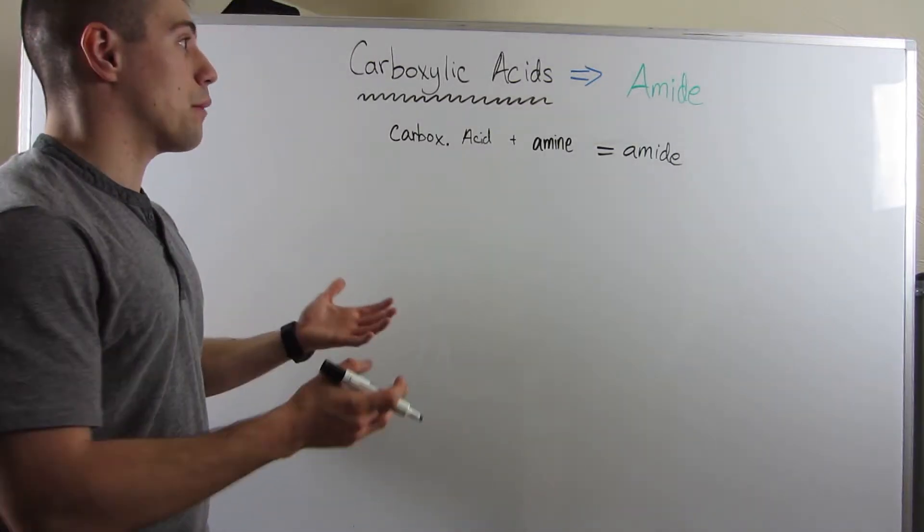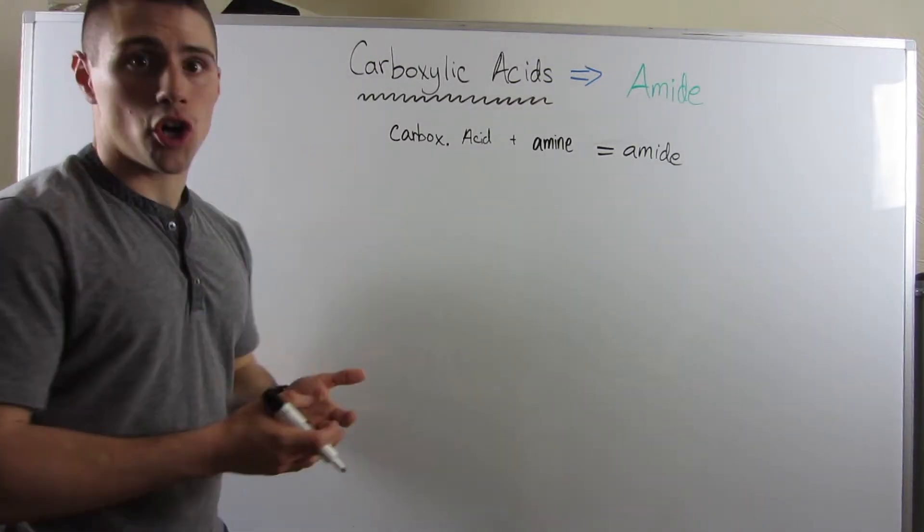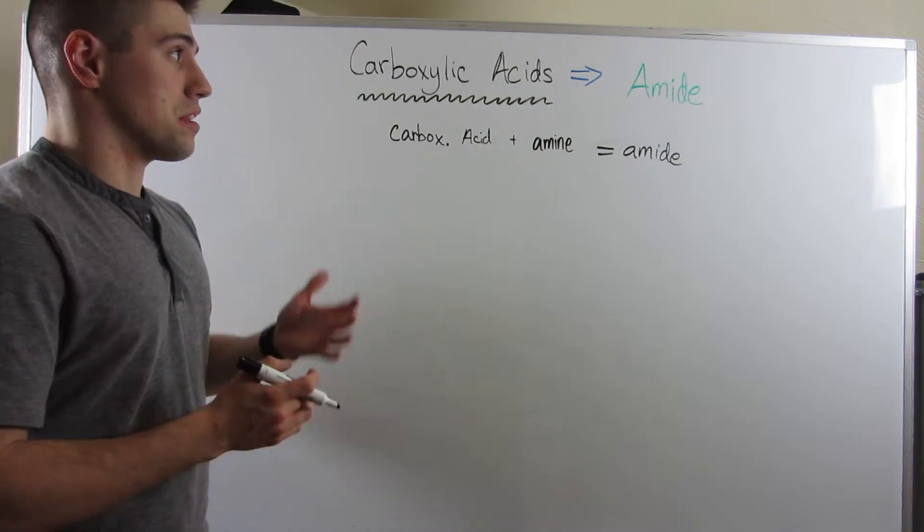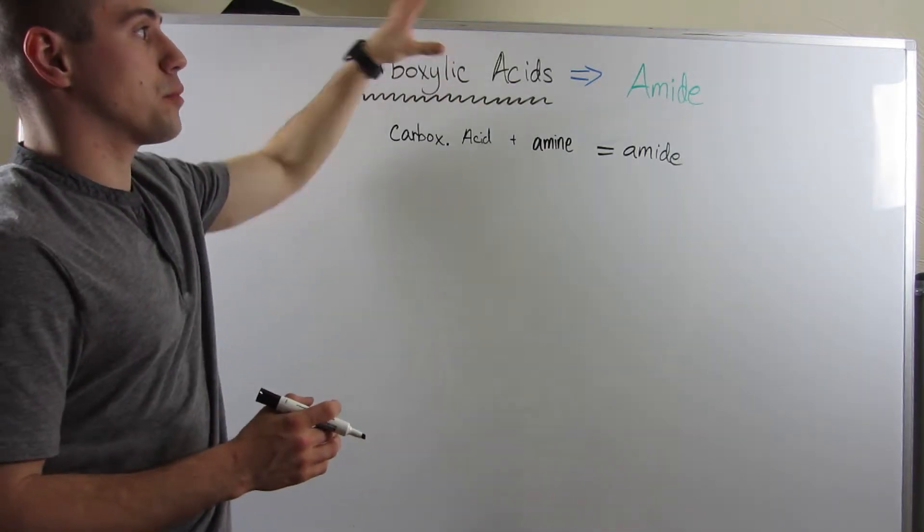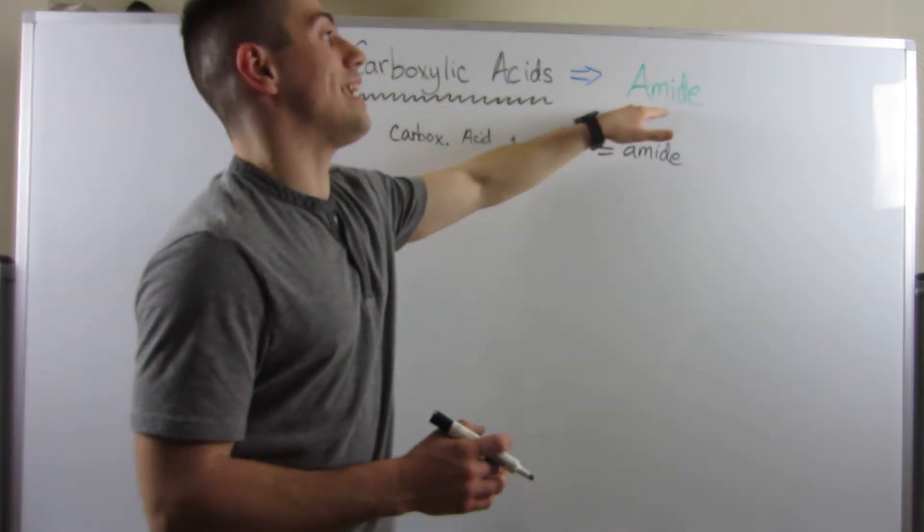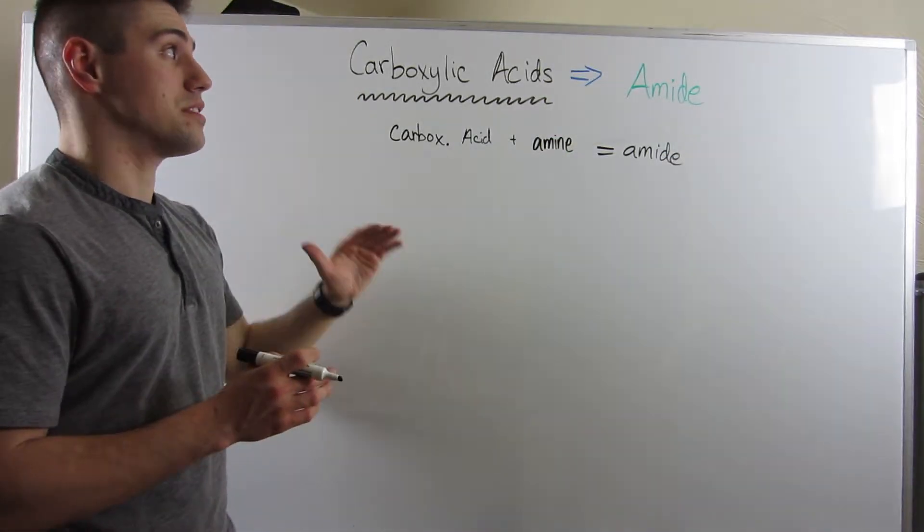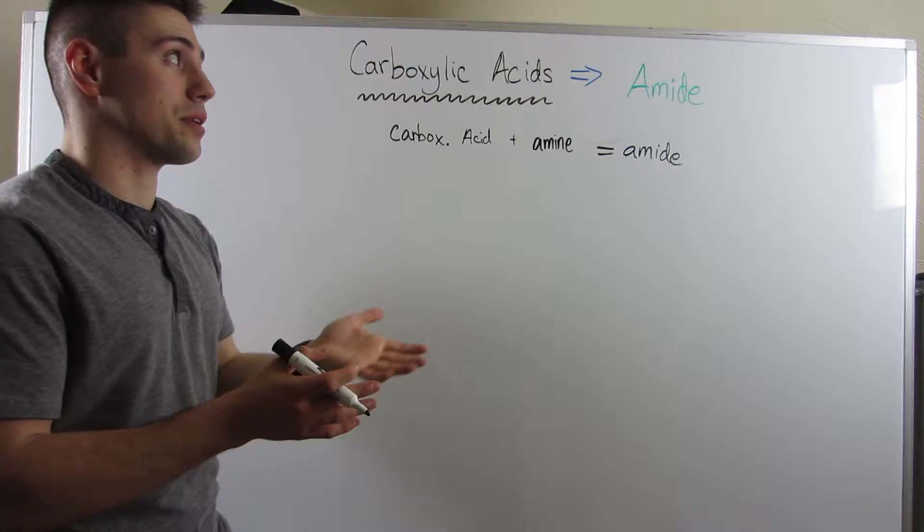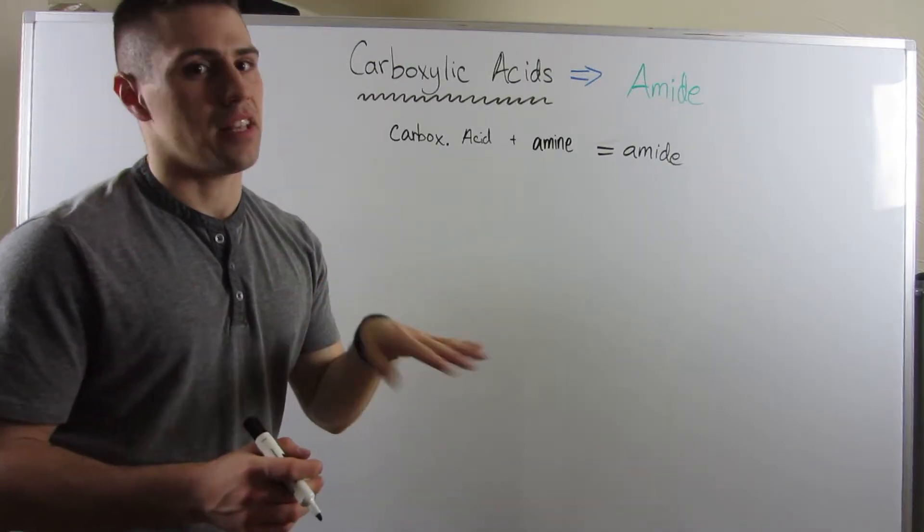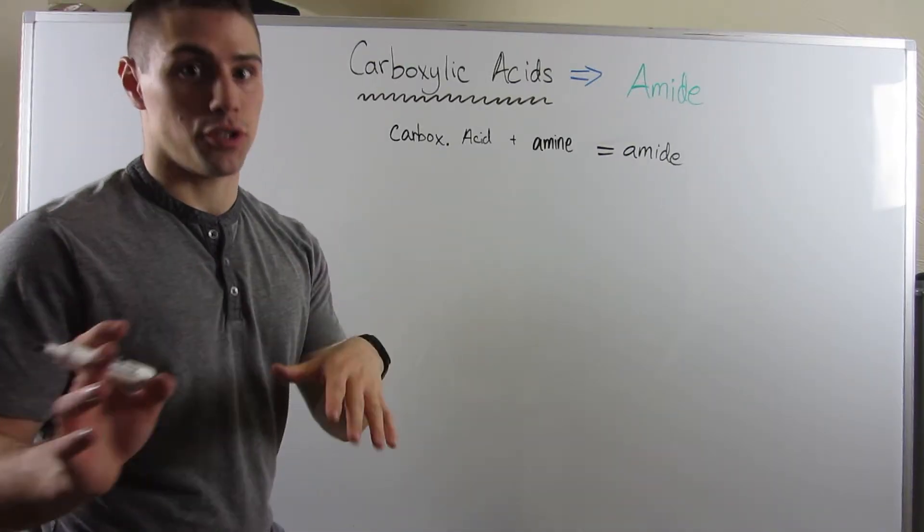So now we're on to our last mechanism in carboxylic acids, and this is where we're going to take carboxylic acids and form a functional group called an amide. I know grammatically you may want to pronounce that amide, but in the organic chemistry world, it's amide. Make sure you say it right.